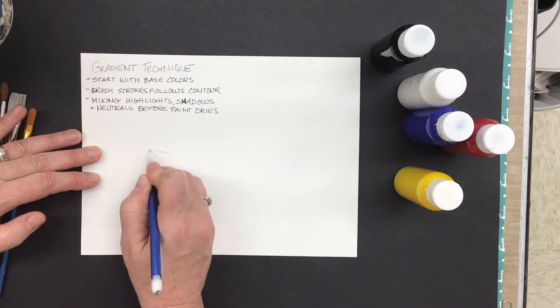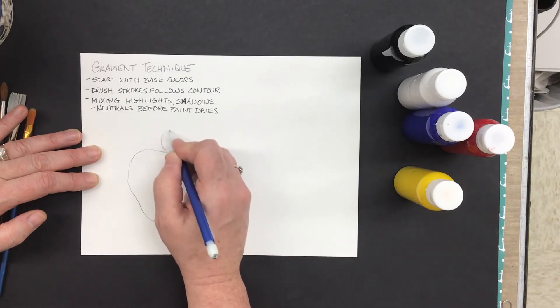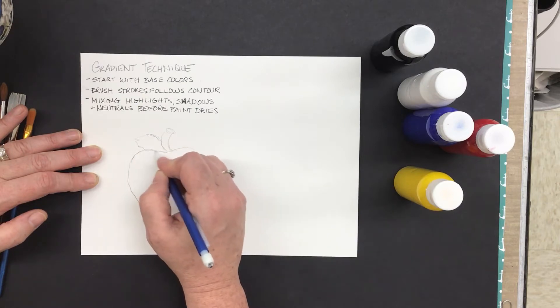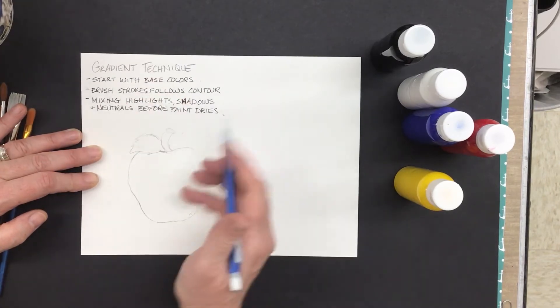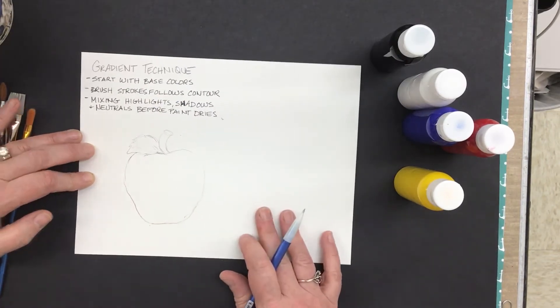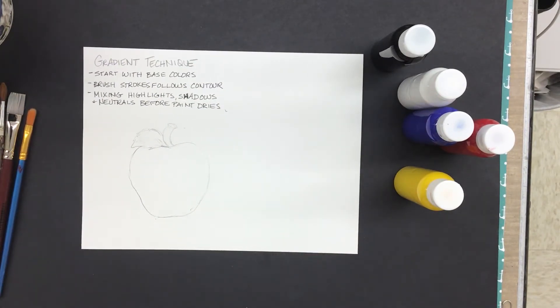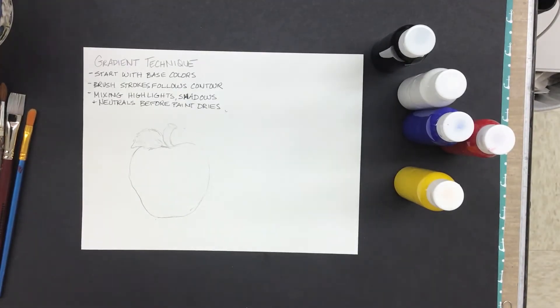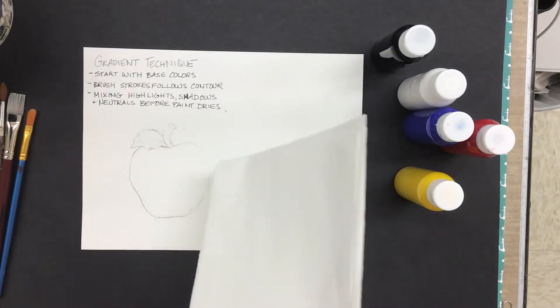So I'm going to start with just a basic form. We'll do an apple. And this is just going to be a quick demonstration of how to follow the contour or how to add the contours. You will also need palette paper, so if you didn't get that before, grab that now.